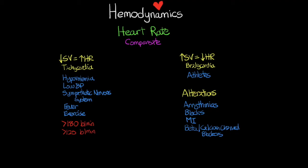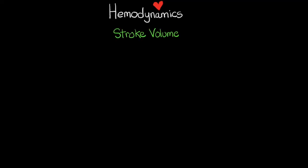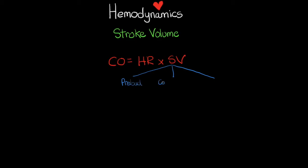Now let's move on to the next component of cardiac output: stroke volume. Cardiac output equals heart rate times stroke volume. Stroke volume is primarily composed of three factors: preload, contractility, and afterload.